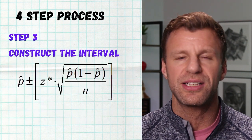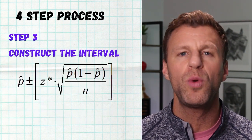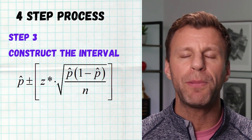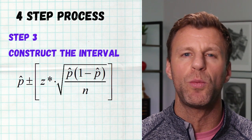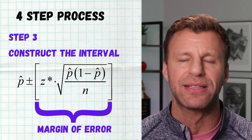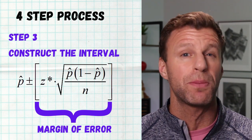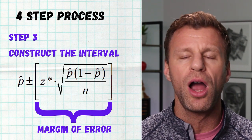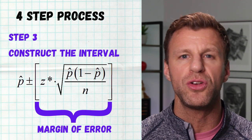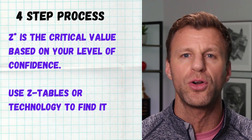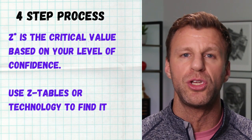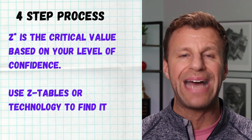Step three is the most fun — the math part where we actually build the confidence interval with a simple formula. We start with our sample proportion P hat, then go up and down by adding and subtracting the margin of error. The margin of error is the product of two things: our critical Z star and the standard error. The critical Z star can be found using a Z table or invert norm on your TI-84 calculator, and it's completely based on how confident you want to be. For 90% confidence, that's 90% of samples in the middle, 10% left out — five at the bottom and five at the top — so we do invert norm of 0.05.